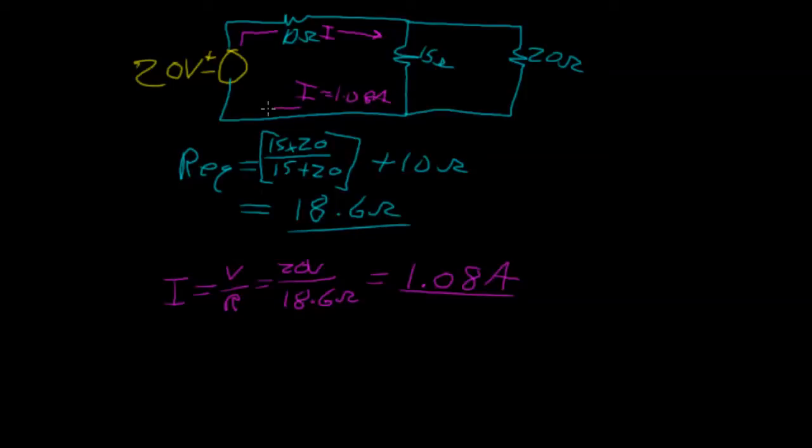What we're trying to do with this example is find how much current after reaching this branch point here flows through the first branch through the 15 and then flows through the second branch of the 20. Let's call this I, let's call this I2 and the first branch I1.